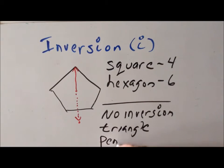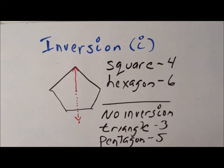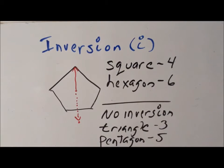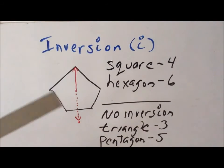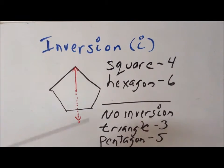We notice that inversion is present for the square and the hexagon — the square has four sides and the hexagon has six sides. And there is no inversion for the triangle or for the pentagon — three sides and five sides. What we can recognize pretty quickly is that when we have an even number of sides for a regular n-gon, the inversion operation will be a symmetry operation of the shape. Whereas if we have an odd number of sides, inversion will not be one of the symmetry operations. So at least for the regular n-gons, this will be our general rule.